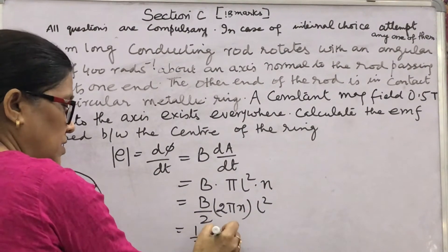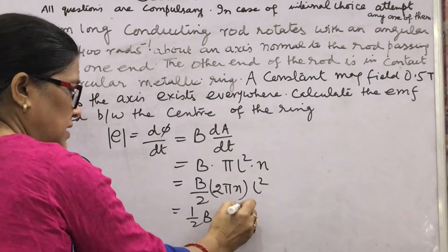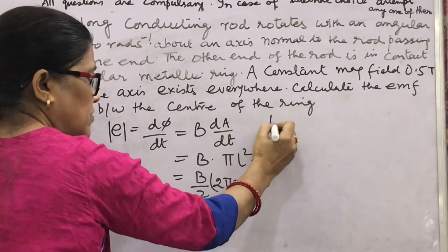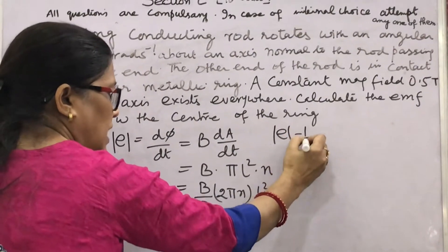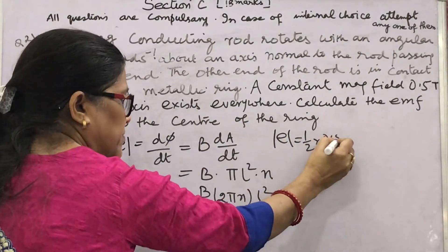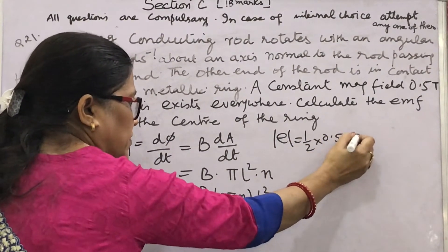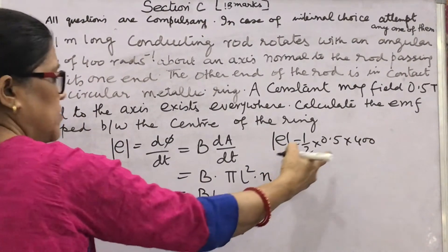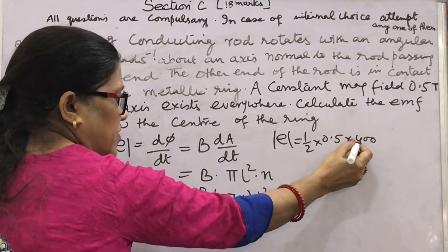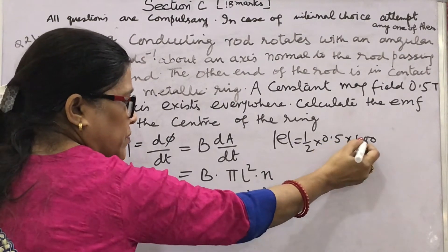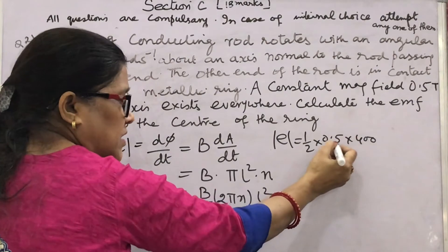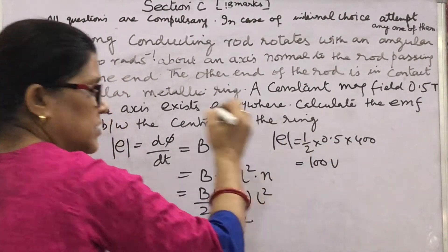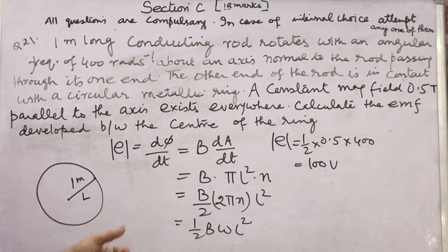The expression is EMF = (1/2) × B × omega × L². Putting the values: (1/2) × 0.5 × 400 × 1² = (1/2) × 0.5 × 400 = (1/2) × 200 = 100 volt. In this way you will solve.